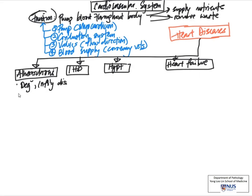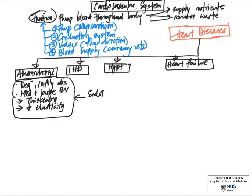As always, the definition is a good place to start. Atherosclerosis is a degenerative and inflammatory disease that affects medium and large vessels — primarily arteries. This results in thickening of the vessel wall as well as reduced elasticity. The pathogenesis involves some form of endothelial injury or susceptibility to injury, for example in hypertension or hyperlipidemia, and this allows for lipid accumulation within the intima, which is the innermost layer of the vessel wall.